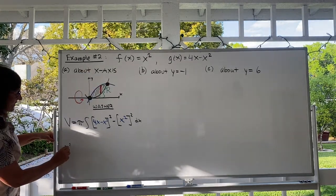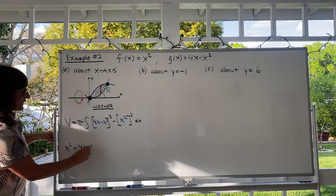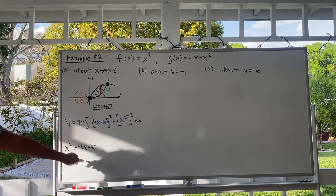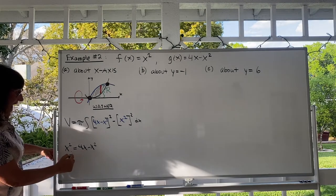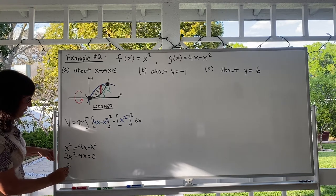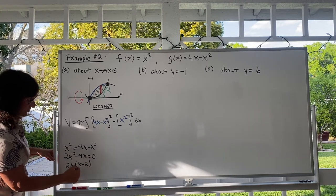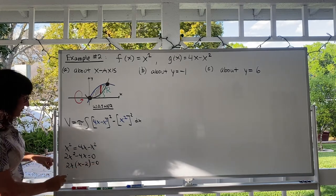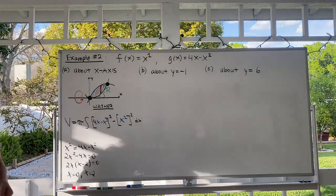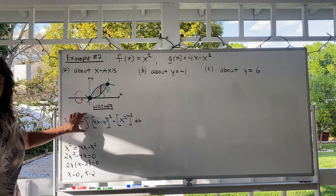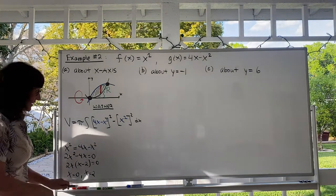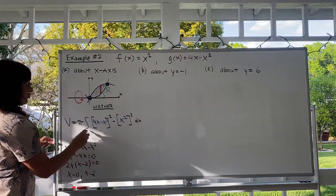The bounds of integration are not given, so we need the x-coordinates of the points of intersection. Set the functions equal: x² = 4x − x². Move all terms to the left: 2x² − 4x = 0, factor out 2x to get 2x(x − 2) = 0. This equals zero when x = 0 and when x = 2. So if the bounds aren't given, they are the x-coordinates of the points of intersection, and we integrate from 0 to 2.